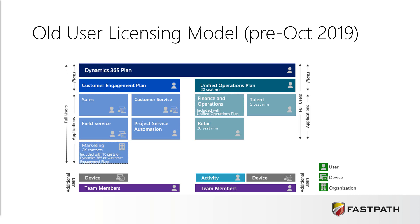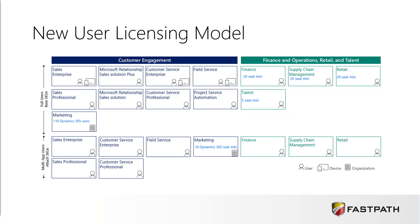That was where we were pre-October 2019. So where did we move to in October 2019? Microsoft released a new licensing model that broke out customer engagement and unified ops — or finance, operations, retail and talent — into these separate, very modularized areas. You don't have the ability to purchase one licensing plan across both anymore. You have to actually go in and purchase individual modules within the different offerings that Microsoft has.